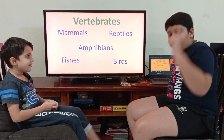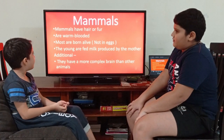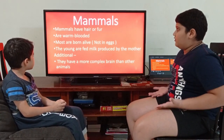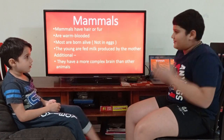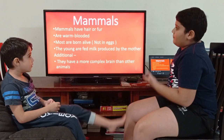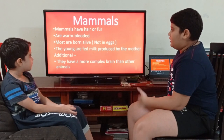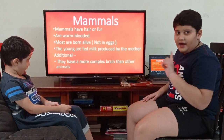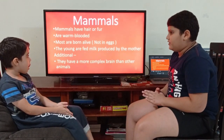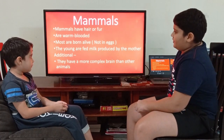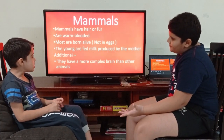Our first type of animal is mammal. Mammals have hair or fur, like we do — we have hair on our body. And mammals are warm-blooded, and most are born alive, not in eggs. And the young are fed milk produced by the mother.